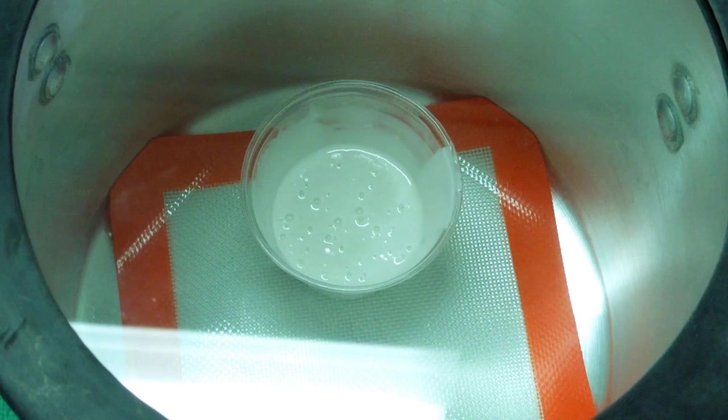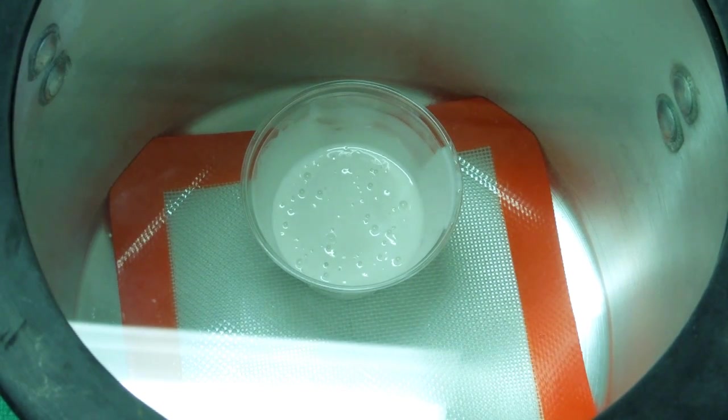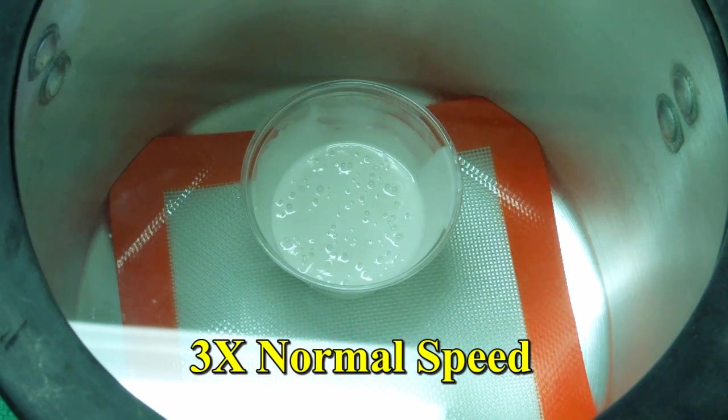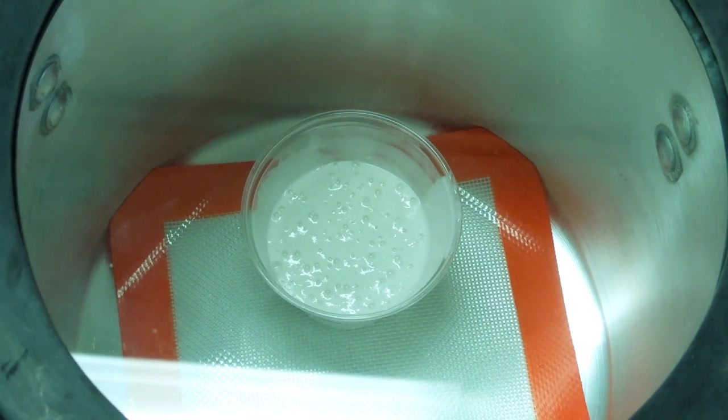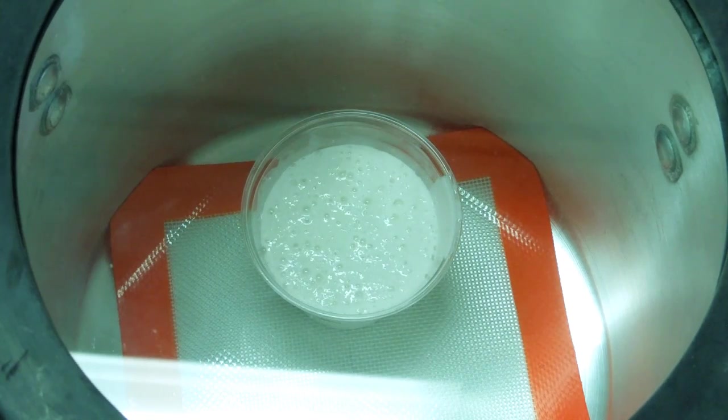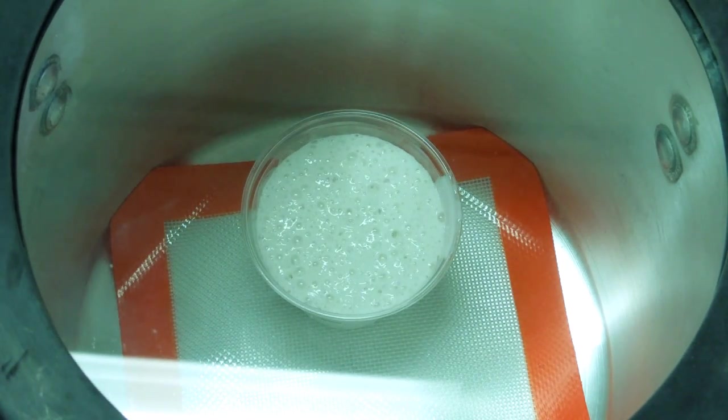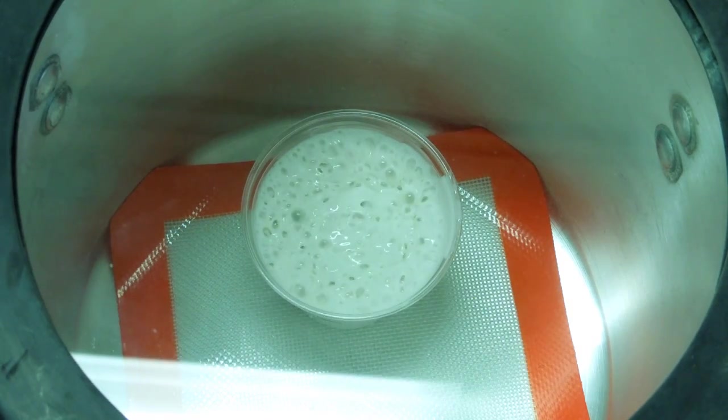Put the lid on the vacuum chamber. Turn on the vacuum pump. The process of pulling a vacuum on this, that silicone will more than double in size. You've got to keep your eye on it and don't let it overflow your mixing container.